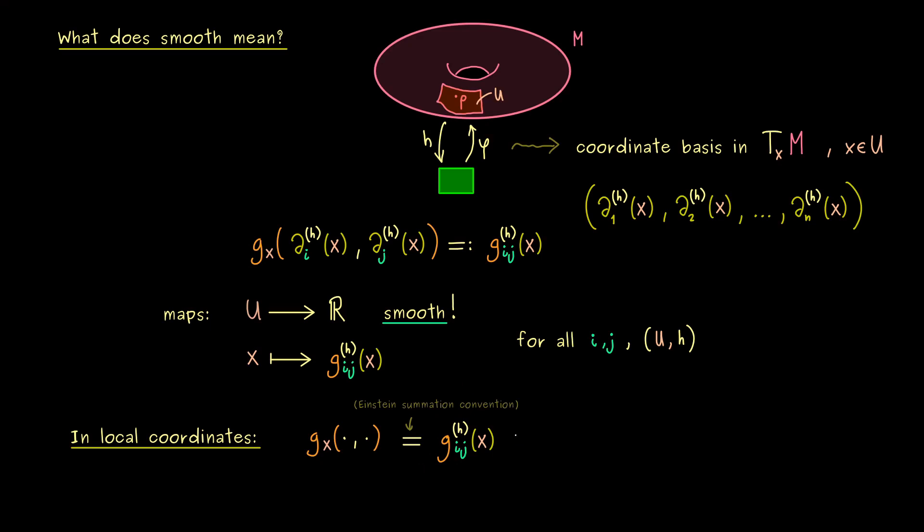And now what we will use are the one forms dx^1, dx^2 and so on corresponding to our chart U,h. The first one here is dx^i and it will get the first vector as an input. And the second one is dx^j which gets the second input here. And maybe to make this clear let's put a circle here and here. It's not so important because we have the symmetry of the inner product anyway.